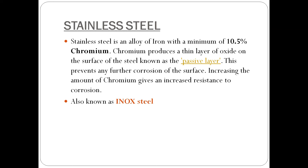Looking at the key differences: carbon steel lacks the corrosion resistance of stainless steel. Although carbon steel is stronger and more durable, it may rust and corrode quickly when exposed to corrosive environments such as moisture. Additionally, carbon steel is less ductile compared to stainless steel. So in summary, stainless steel wins on corrosion resistance and ductility, while carbon steel is stronger and harder.